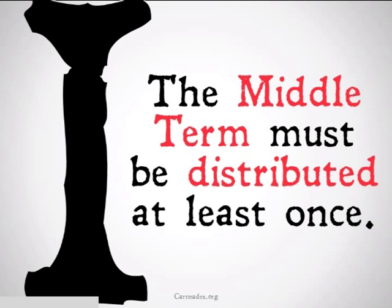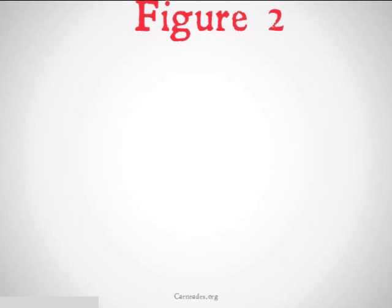Rule one, we remember, is that the middle term must be distributed at least once. Check out my video on that if you're confused.